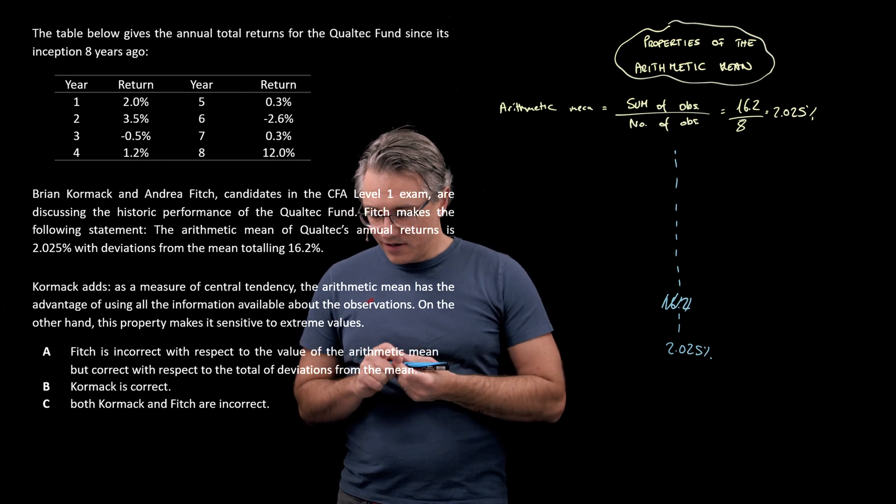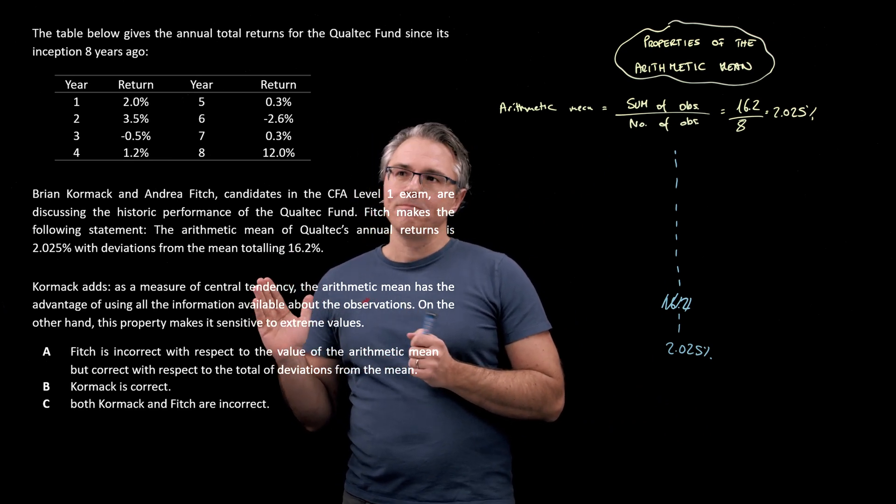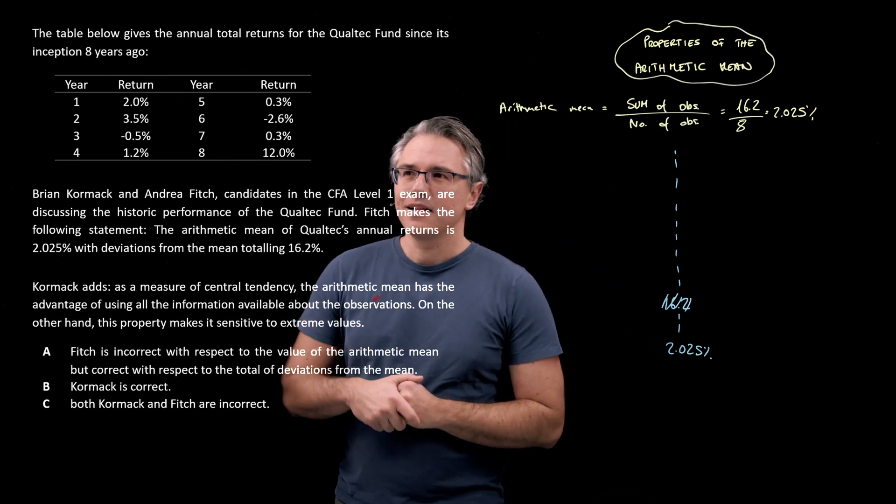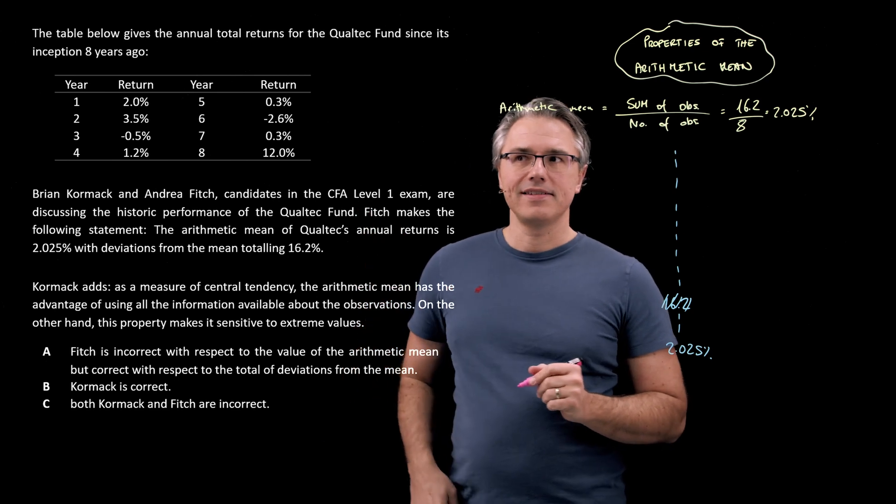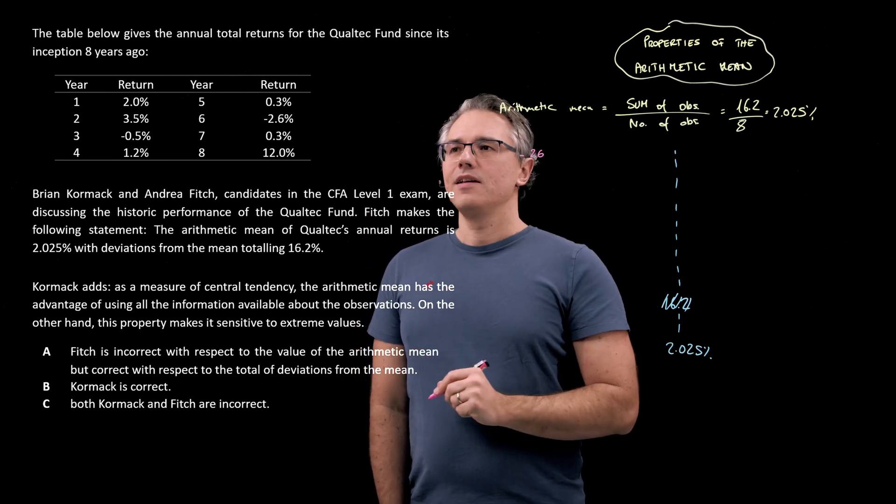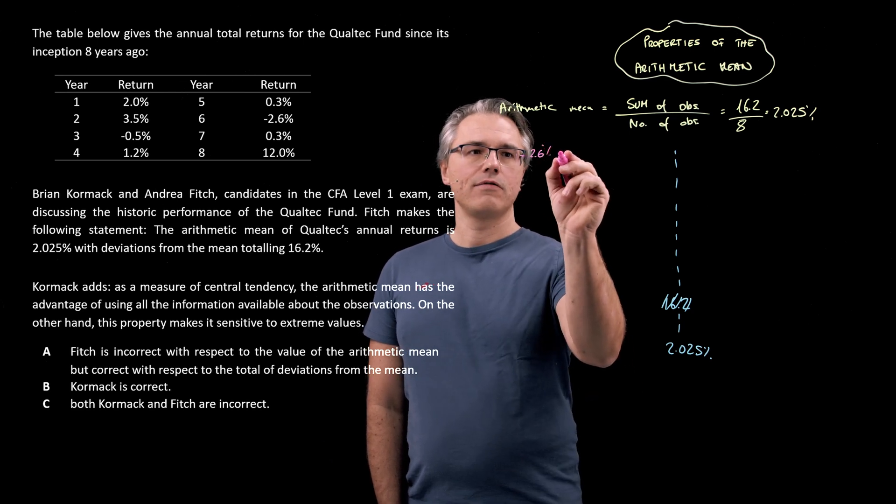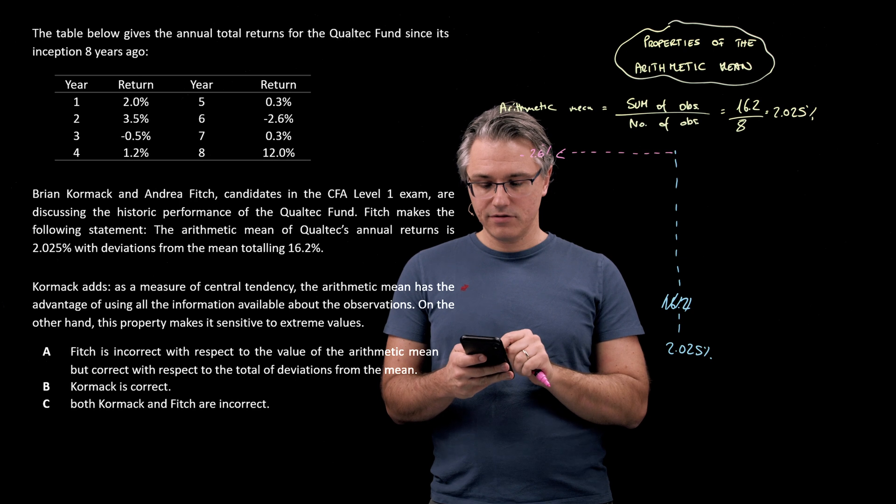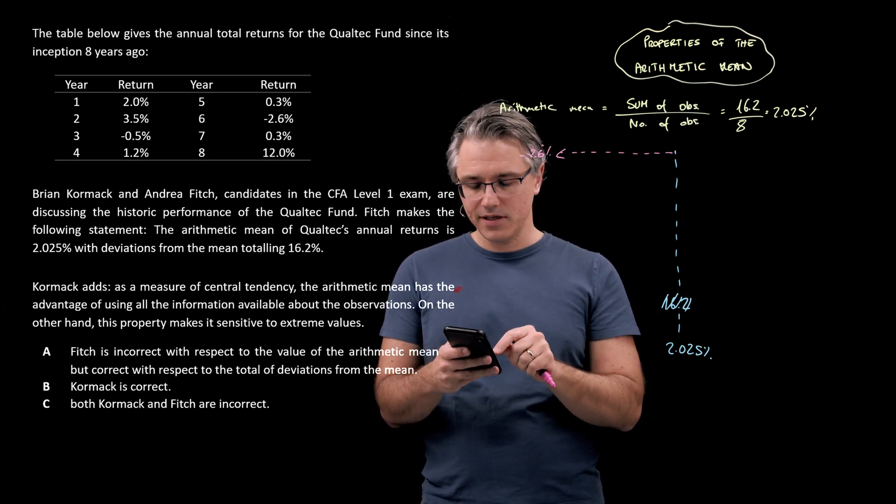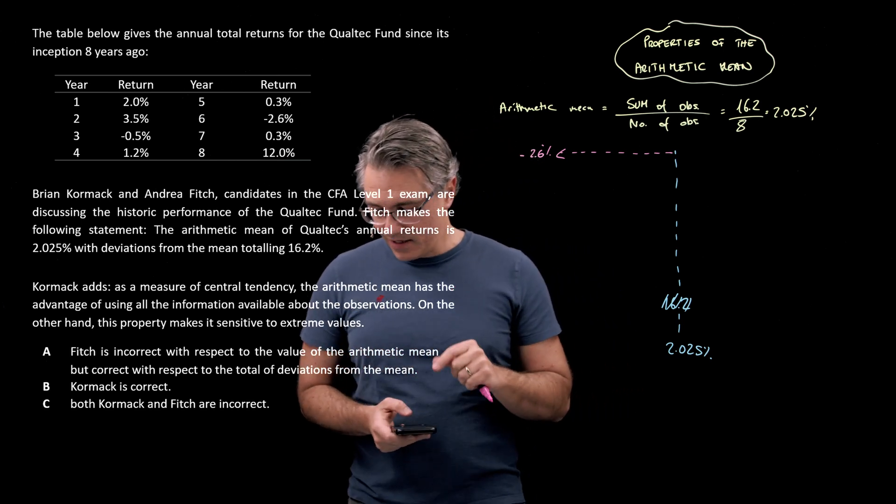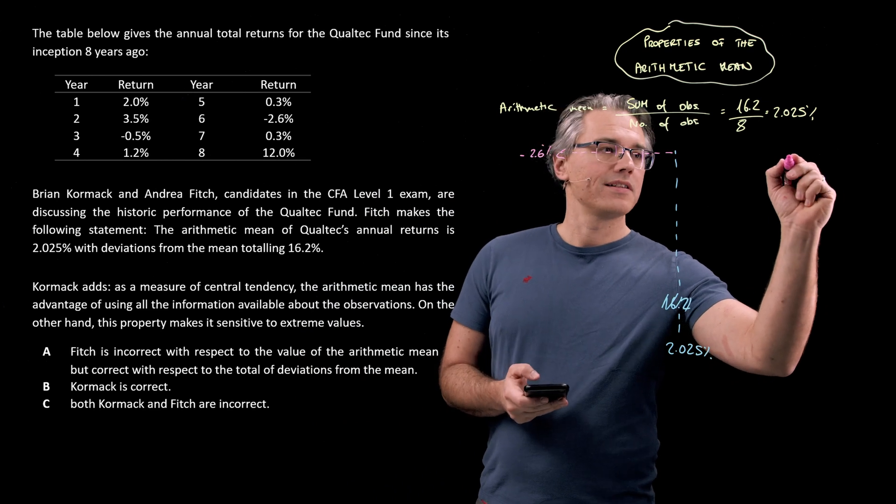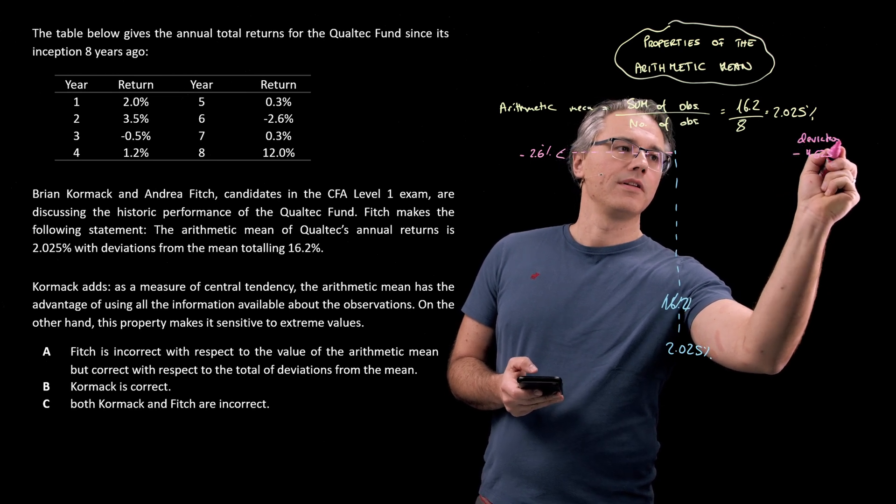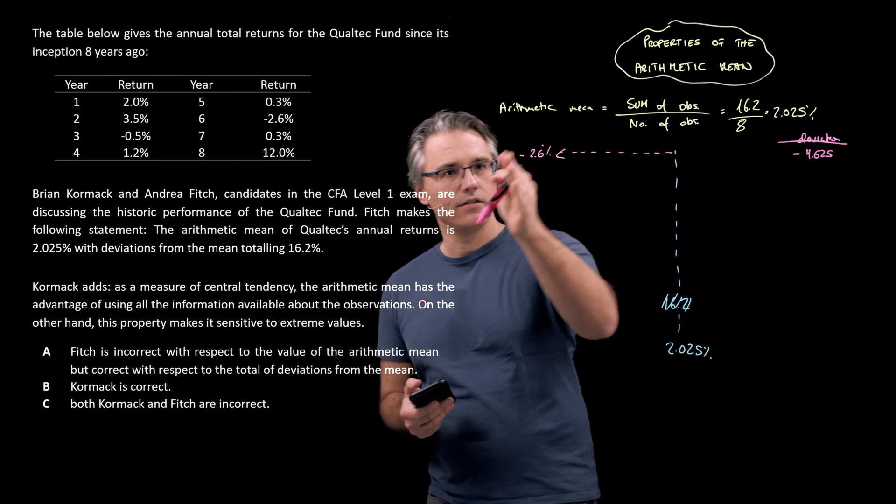Then, what this question is asking about is, what's going to be the sum of the deviations, the distances from the mean for all the data? And let's start with the lowest point over there, which was the year 6 return. It was a negative 2.6. So, if this is negative 2.6%, the question is, what's the distance to the mean? Let me quickly do this, but it's 2.025 minus a negative 2.6, so effectively plus 2.6. That's going to be a distance of 4.625, but it's negative. That's the deviation from the mean of this one. It's a negative 4.625 from here to there.